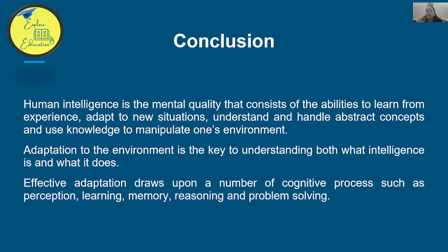Adaptation to the environment is central to every definition of intelligence. As Darwin noted with the theory of natural selection and survival of the fittest, adaptation is essential — those who adapt are intelligent; those who cannot are not. Adaptation involves cognitive processes: perception (perceiving the problem), learning, memory (retaining what is learned), reasoning, rational thinking, and problem-solving — all these cognitive processes are necessary for adaptation.